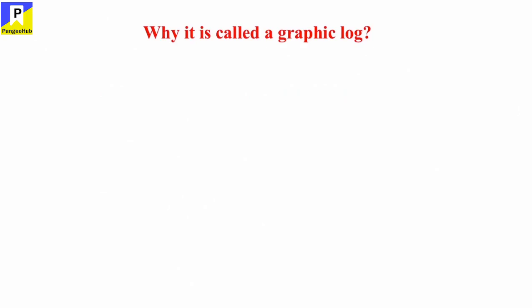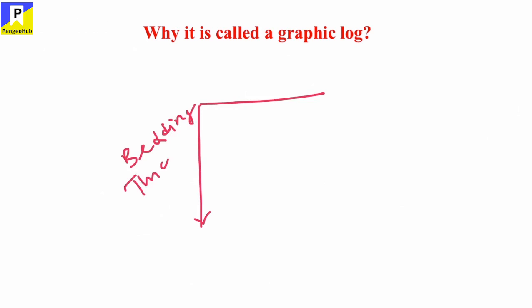Why is it called a graphic log? Because the construction of a sedimentary graphic log resembles a graph, with bed thickness on the vertical axis and grain size of those beds on the horizontal axis. As the construction of a graphic sedimentary log resembles a graph, we call it a graphic log.